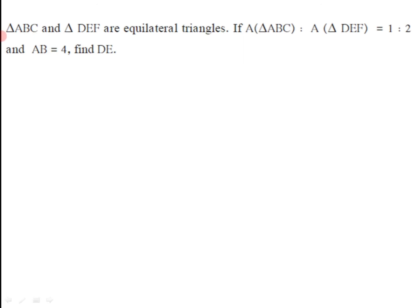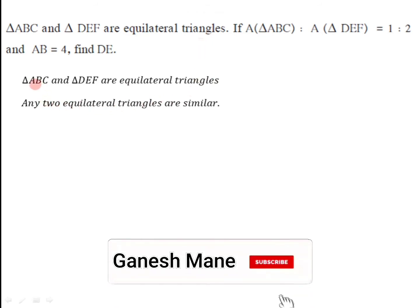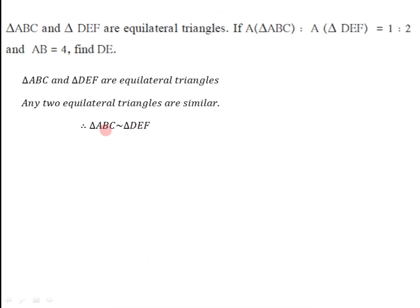Next question: Triangle ABC and triangle DEF are equilateral triangles. The area of triangle ABC to area of triangle DEF is equal to 1:2. If AB = 4, we have to find DE. Since any two equilateral triangles are similar, triangle ABC is similar to triangle DEF, and we can apply the theorem of areas of similar triangles.